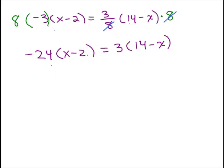So now let's distribute carefully. We have negative 24 times x which is negative 24x and we have a negative times a positive here so it's plus 48. And on the right side, we're distributing our 3. 3 times 14 is 42 minus 3 times x is 3x.